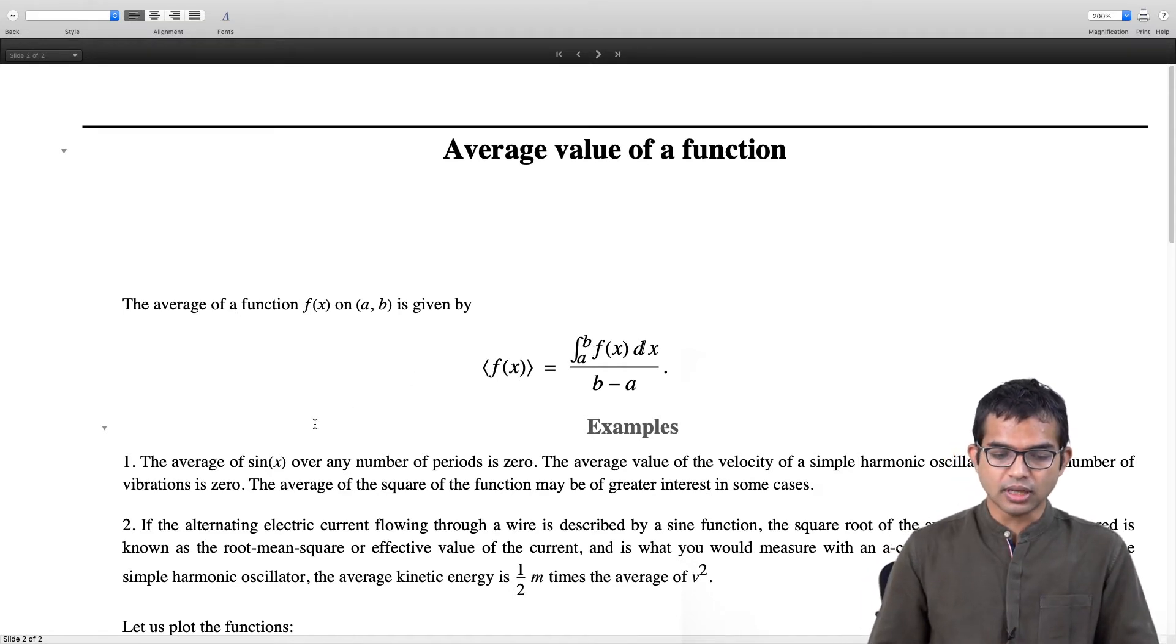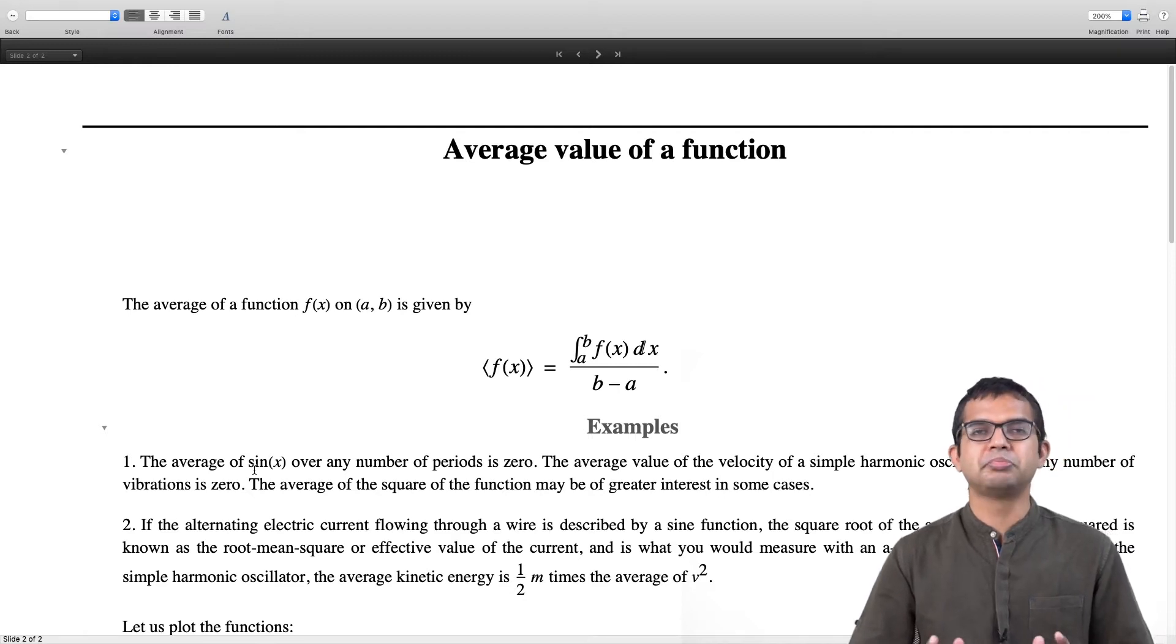The average of a function appears in many contexts. The average of sin(x) over any number of periods is going to be 0, as long as you take a full period. If you take an average over half a period, it is not going to be 0. The average value of the velocity of a simple harmonic oscillator over any number of vibrations is 0, because averaging over a sinusoidal function is going to give you 0.